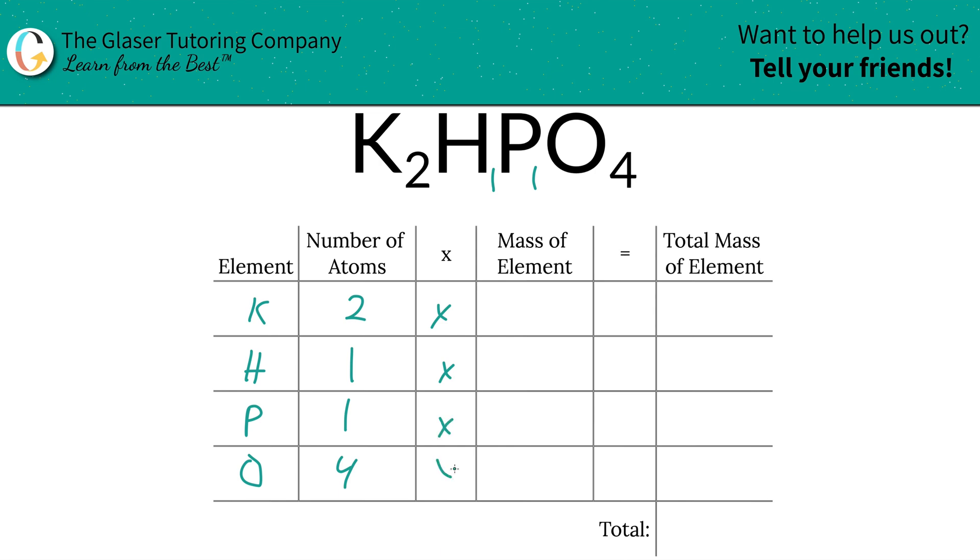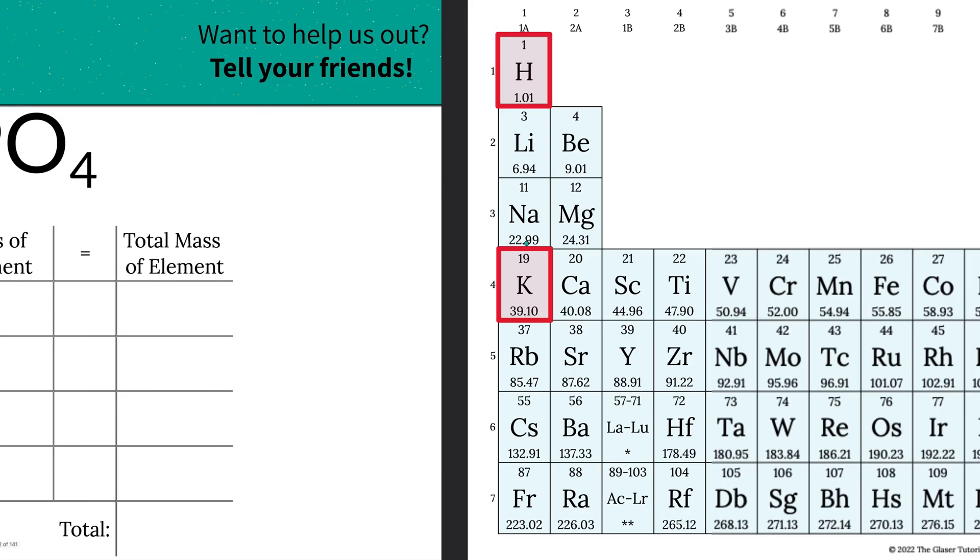Then we're going to take those number of atoms and multiply them by the mass of each particular element there. And that's where we got to go to the periodic table.